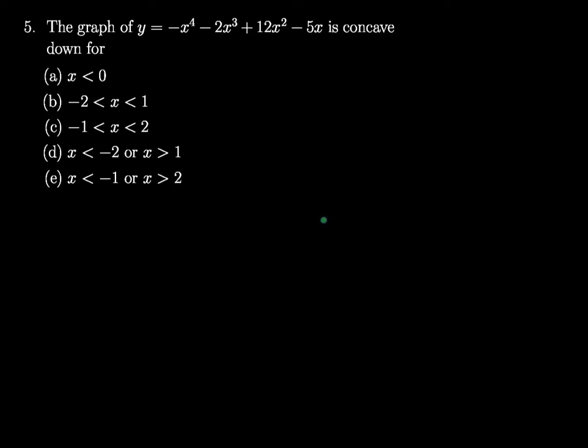Okay, problem 5. The graph of y equals negative x to the fourth minus 2x cubed plus 12x squared minus 5x is concave down for, and I have a few choices of intervals here.